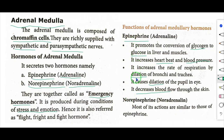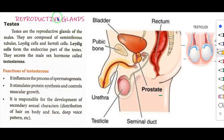Most of the actions of norepinephrine are similar to those of epinephrine. Reproductive glands are called gonads. The sex glands are of two types: testes and ovaries.